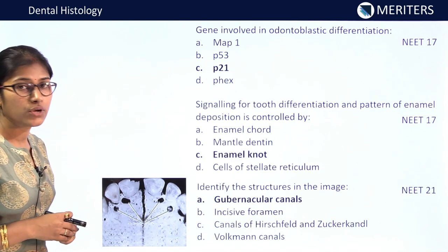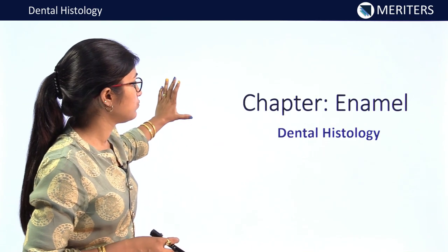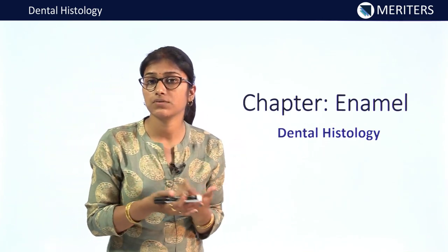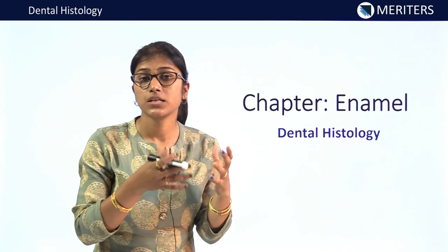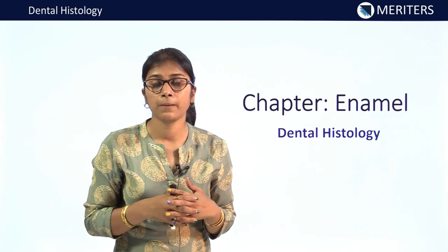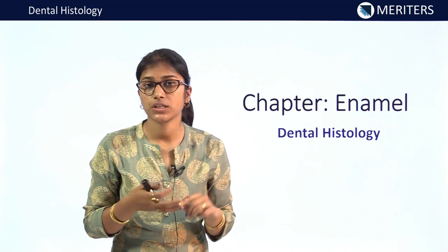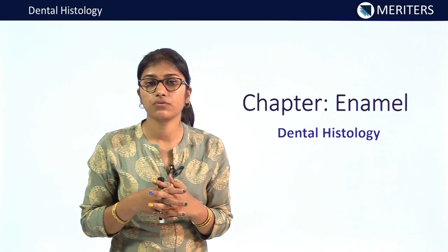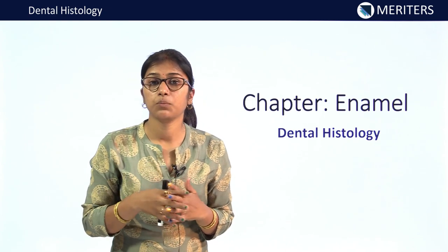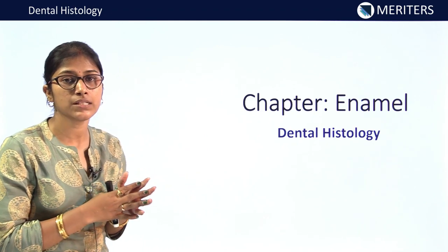To summarize the development chapter: stages were asked, specific structures were asked, stratum intermedium enzymes were asked twice, and you should know the aberrations — in which stage (morpho-differentiation vs. histo-differentiation) and what their results are. Some signaling molecules were also asked. Now we'll move to the next chapter: enamel.